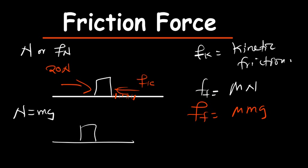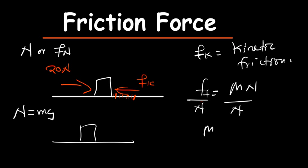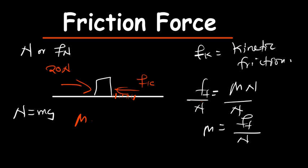Another thing to note is if we make mu the subject of the formula, we divide both sides by N, so the mu value is the friction force divided by N. We can deduce from here that the mu value — the coefficient of friction — is basically the ratio of the friction force to the normal force.